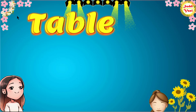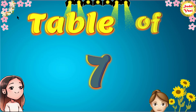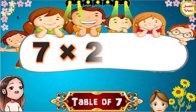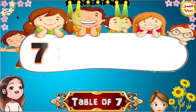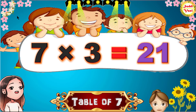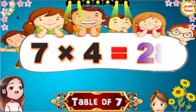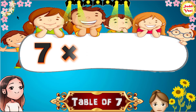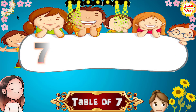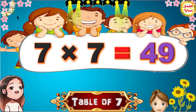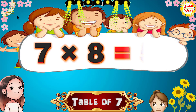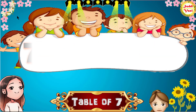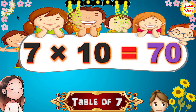Hello children, we will learn table of 7. 7 1's are 7, 7 2's are 14, 7 3's are 21, 7 4's are 28, 7 5's are 35, 7 6's are 42, 7 7's are 49, 7 8's are 56, 7 9's are 63, 7 10's are 70.